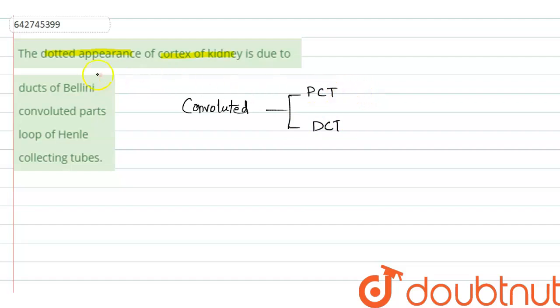Let us see the options one by one. The first option is ducts of Bellini, it is wrong. The second part is convoluted parts, it is correct because dotted appearance of kidney is due to convoluted parts that are proximal convoluted tubule and distal convoluted tubule.